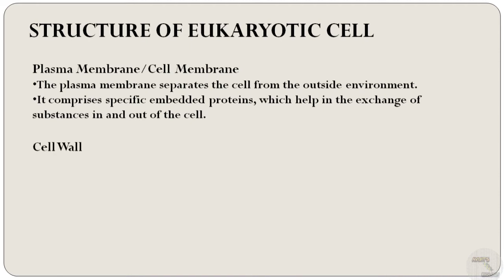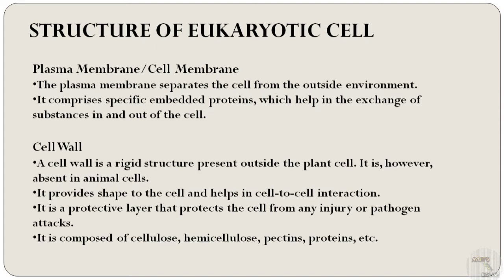Next is the cell wall. Among the eukaryotes, some protists, all fungi, and all plants have cell walls. The cell wall is the rigid structure outside the cell membrane and it is absent in animal cells. It provides shape to the cell and helps in cell-to-cell interaction. It is a protective layer that protects the cell from any injury or pathogen attacks. It is composed of cellulose, hemicellulose, pectins, proteins, etc.